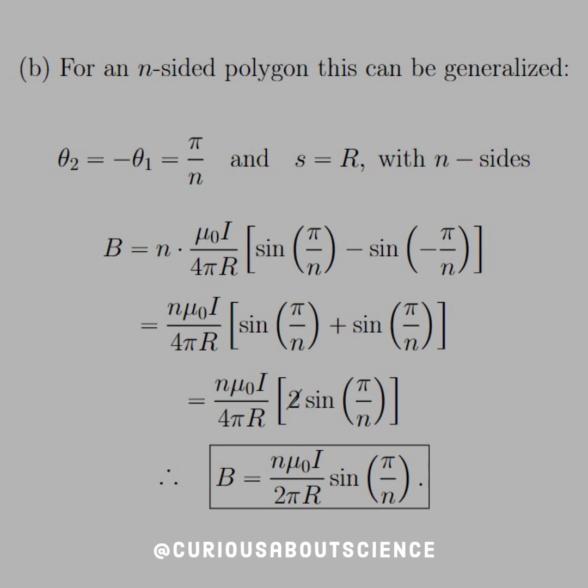Again, invoking a property of it being odd. The negatives cancel, and then we're left with two copies of sine pi over n. So, you see here that this 2 here cancels with the 4 in the denominator, thus leaving us with the magnetic field at the center equal to n mu naught I over 2 pi R times sine of pi over n.